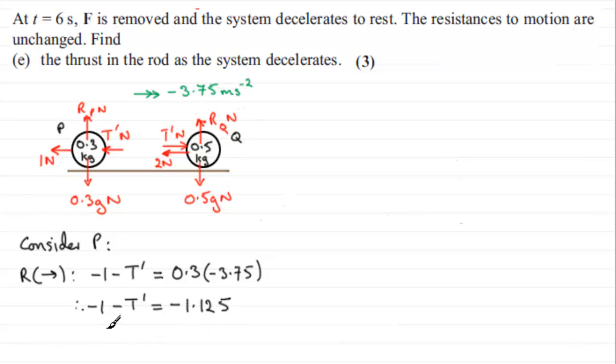So to get T dash, all I've got to do is add T dash to both sides and add 1.125 to both sides. So I get that T dash equals 1.125 minus the 1. And that leaves me with the thrust T dash equaling 0.125. Okay, so that's considering P.